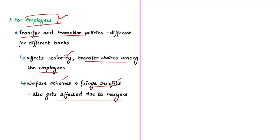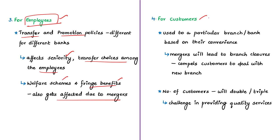Regarding the impact on customers: banking is not a simple commercial transaction — it is accompanied by personal experiences and long-standing relationships with a particular bank. Customers, including depositors, are used to a particular branch servicing their needs for years or even generations. Due to branch rationalization during mergers, some branches will be closed, compelling customers to deal with new branches. Also, the number of customers per merged branch will double or triple, and staff may be reallocated without knowing borrowers' histories.